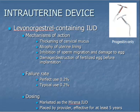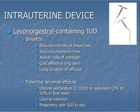There are currently two types of intrauterine devices, or IUDs. IUDs must be placed into the uterine cavity by a health care provider in the office. One type is the progestin-containing IUD. Its mechanisms of action, failure rate, and dosing are listed here. Benefits and potential adverse effects of the progestin-containing IUD are listed here.